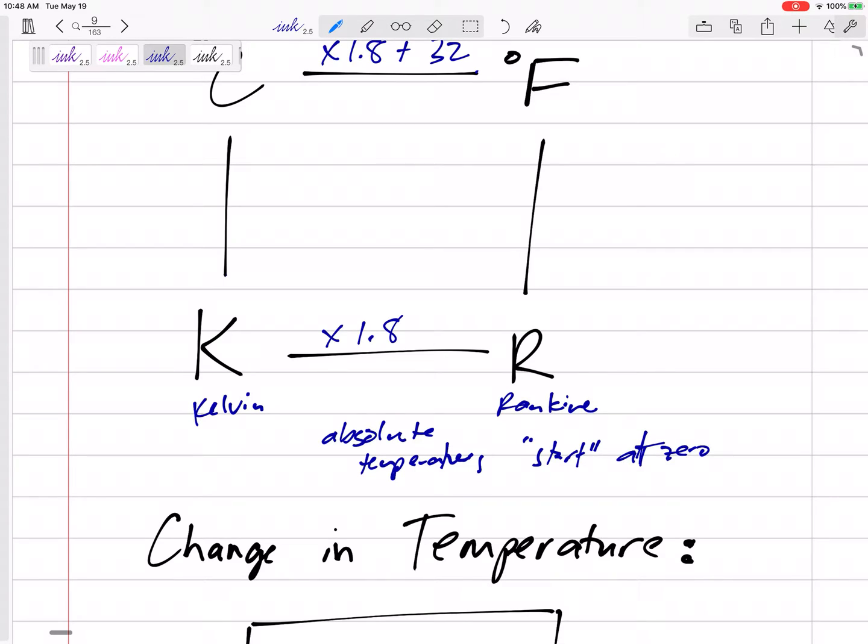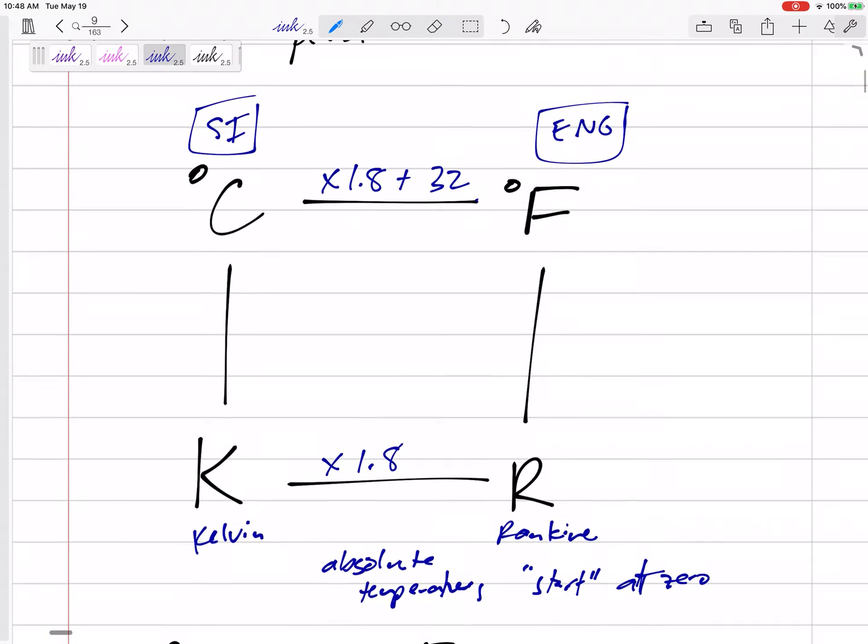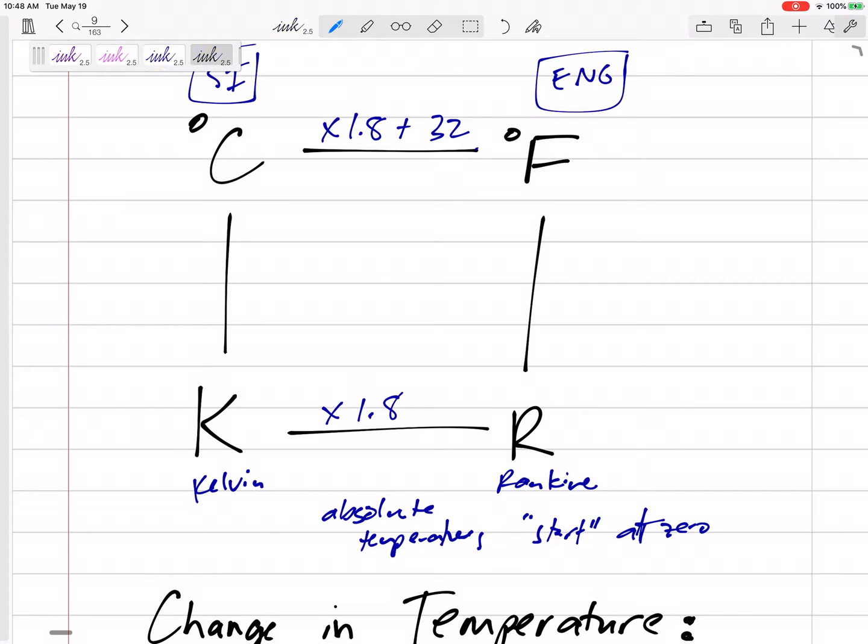Meaning at the lowest temperature you can get is zero, absolute zero. So there are no negative Kelvin or negative Rankin - those are absolute temperatures. And we don't put degrees Kelvin or degrees Rankin, it's just capital K Kelvin and Rankin.